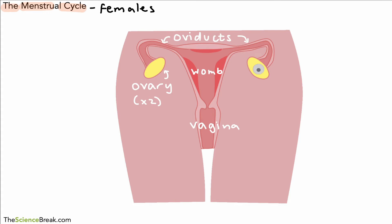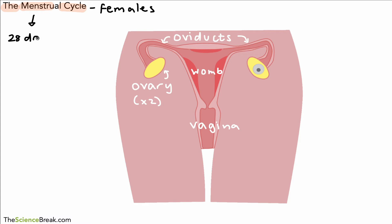An egg is matured in the ovaries — I've just enlarged it there so you can see a bit more clearly. The key point to remember is that the menstrual cycle for humans lasts around about 28 days. It can be a little bit more or a little bit less, but 28 days is the approximate timescale for this whole cycle to work.